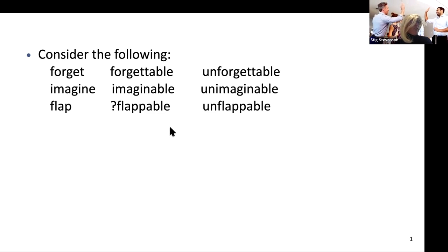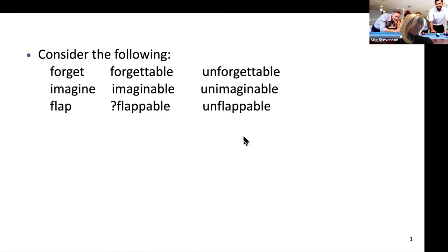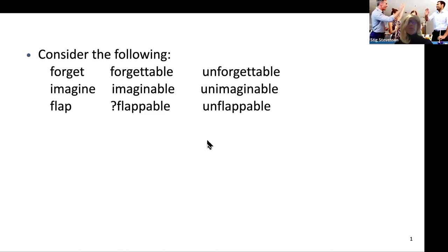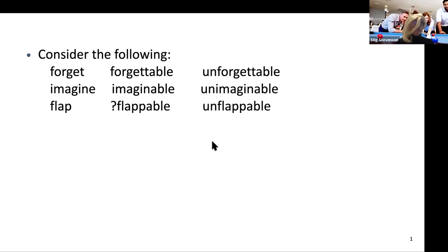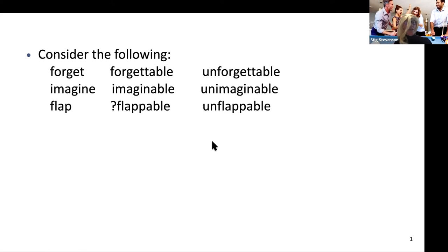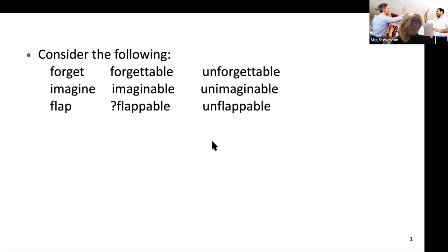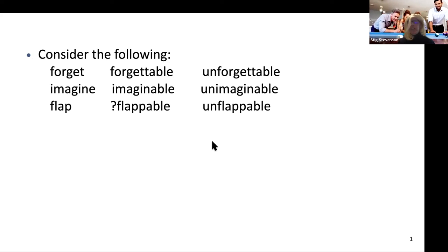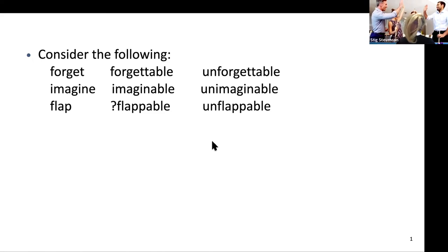Furthermore, the historical evidence suggests that the adjective unflappable can't possibly have been built up by simply adding derivational morphemes one after the other. With the meaning 'not subject to nervous excitement or anxiety,' the OED suggests unflappable first appeared in 1959 with reference to the then British Prime Minister Harold Macmillan. Yet flappable doesn't appear in the OED at all, and Wiktionary lists it as a back-formation from unflappable.